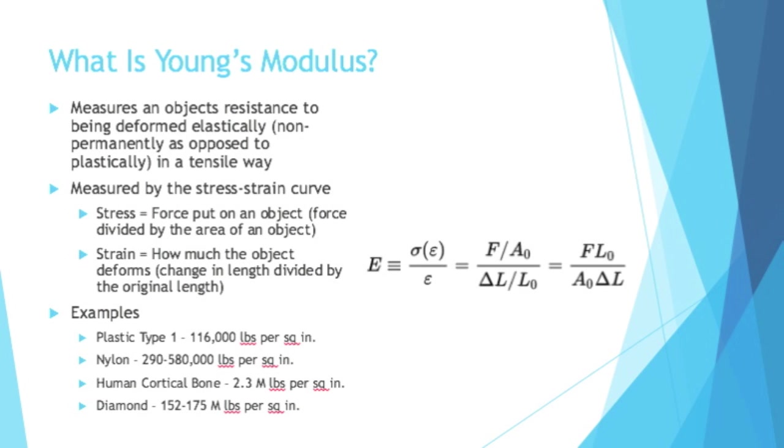Here are some examples of Young's modulus you would see for certain objects. So for plastic type 1, if you have a bottle or something that has a triangle with a 1 on it, it has a Young's modulus of roughly 116,000 pounds per square inch. So to pull that plastic, it would take a great amount of force. Nylon can be anywhere between 290 and 580,000 pounds per square inch. Human bone, 2.9 million pounds per square inch. That's a good thing. So it is 20 times harder to pull apart your bone than it is to pull apart plastic type 1. I'm happy about that.